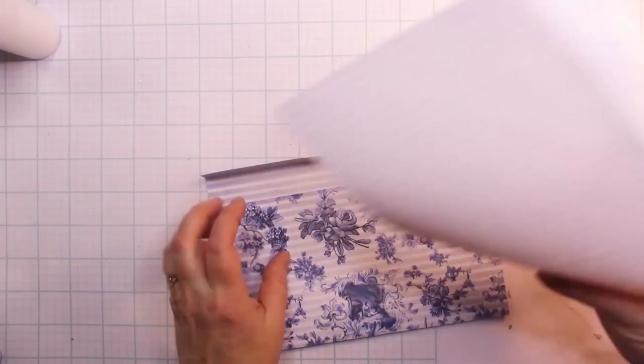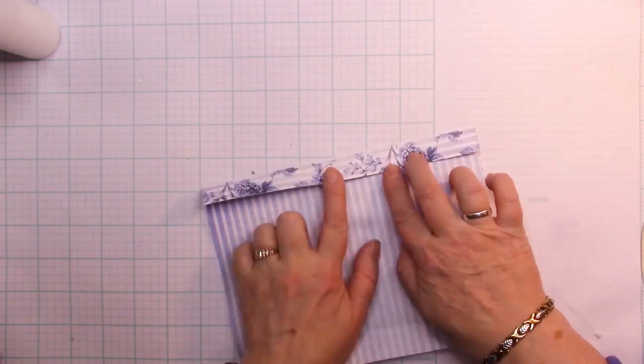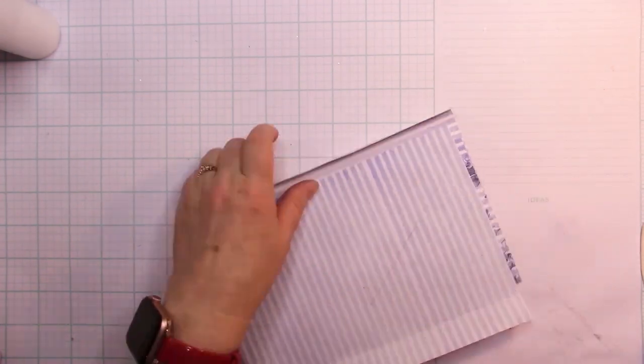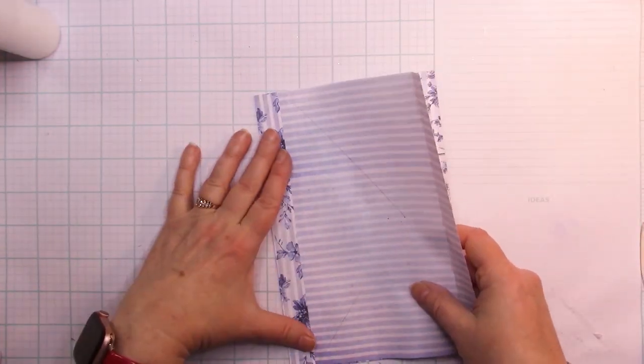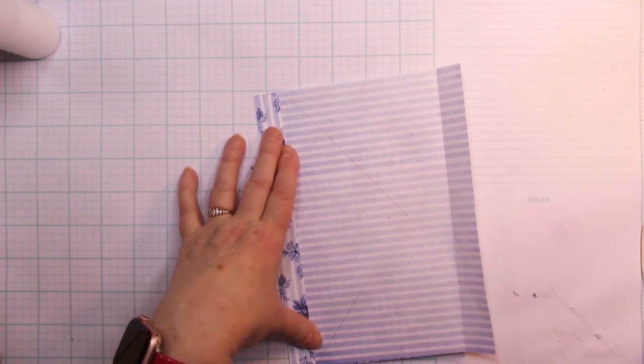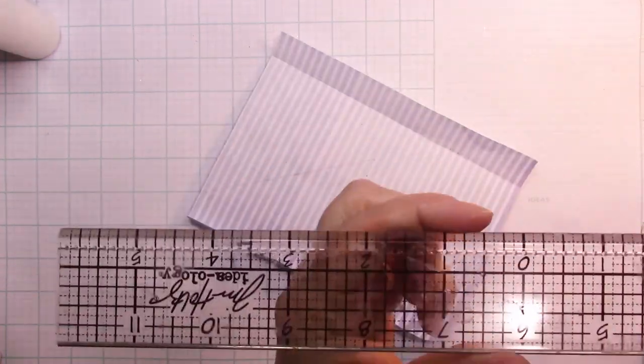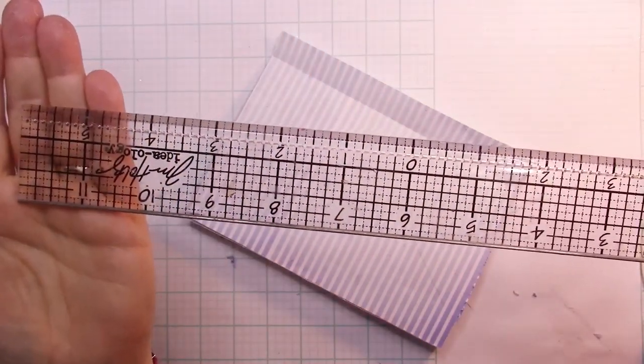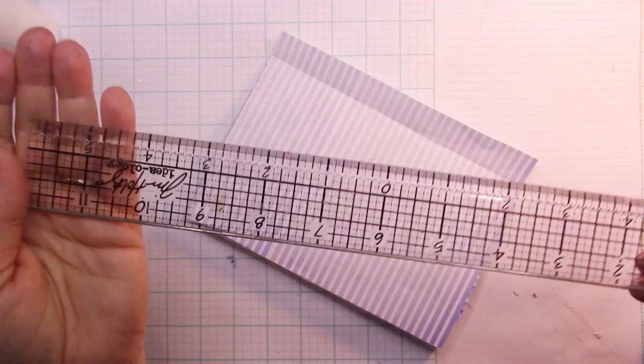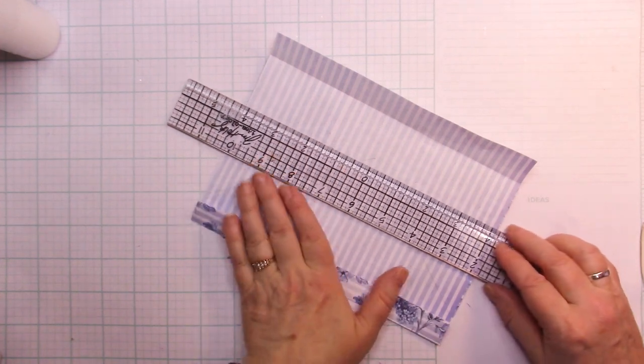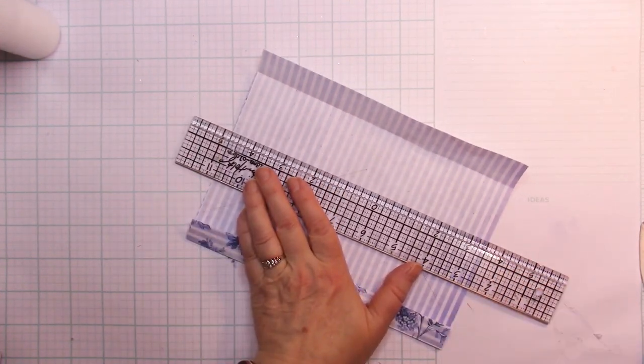So now we're going to be making the flap for the outside. Cut a piece that's the same size as the width of your paper. So what we're going to be doing is making a flap. You can see I already have some pieces there. This is a ruler that I like using. It's a Tim Holtz ruler, and see that zero right there?